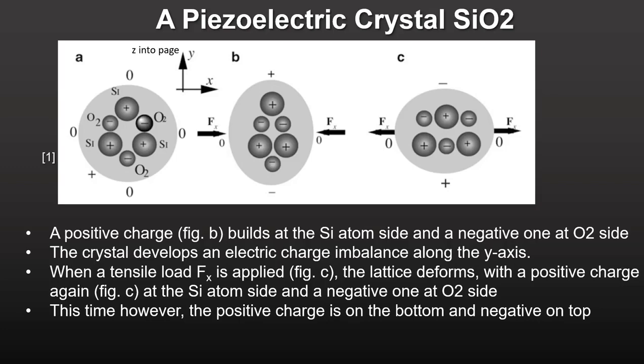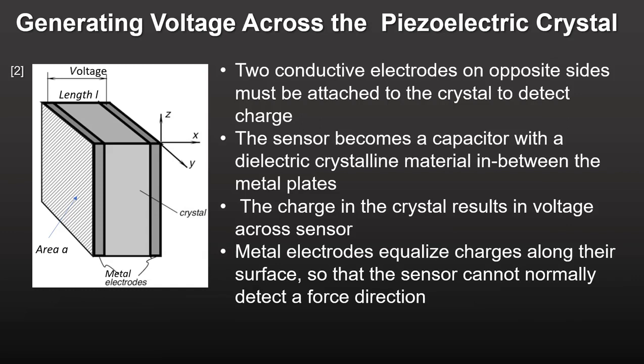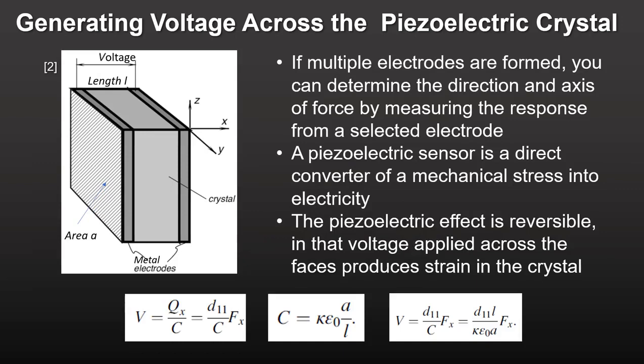You get negative charge on the top and positive charge on the bottom. You can't measure the piezoelectric charge unless you attach conductive electrodes to both ends of the crystal. When you do this, your piezoelectric crystal becomes a capacitor with a dielectric material in between the plates — the dielectric material is the crystal itself. The voltage across the electrodes is proportional to the force in the crystal. Because the electrodes equalize charges along the surface, the piezoelectric crystal cannot normally detect force direction. If electrodes are formed with a complex pattern, you can determine the location of the applied force by measuring the response from a selected electrode.